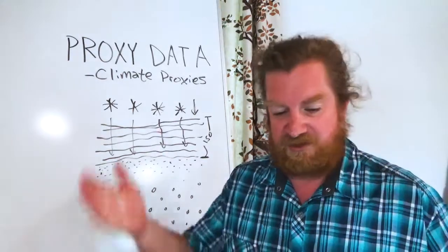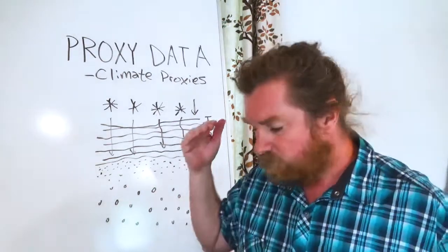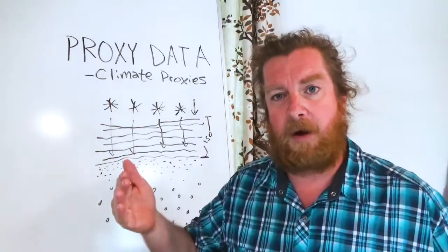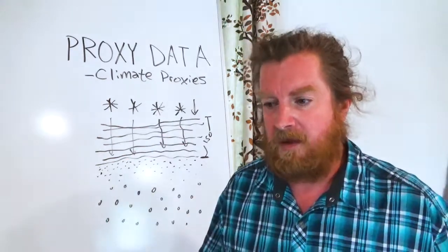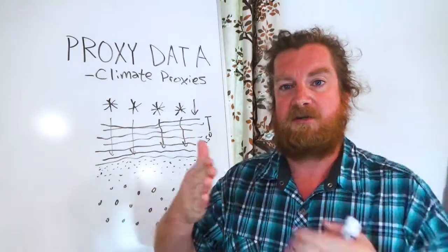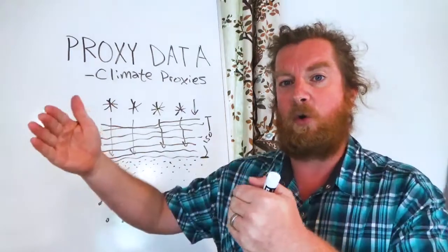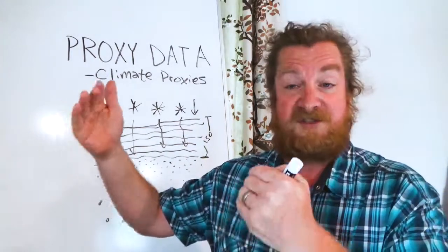I'm going to stop the video here because now that we understand glacial ice and how it forms these little gas bubbles, I want to get into what we can learn from those gas bubbles and what the data looks like. Just to circle back — we talked about proxies, climate proxies: things that you can measure that you can correlate to temperature.